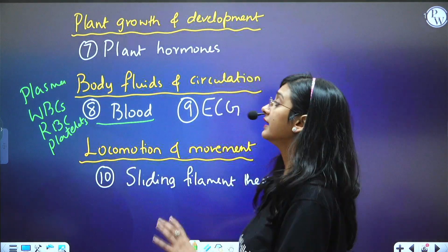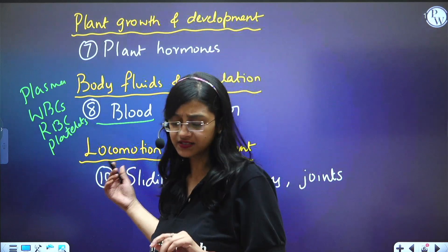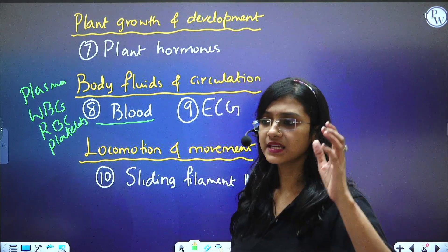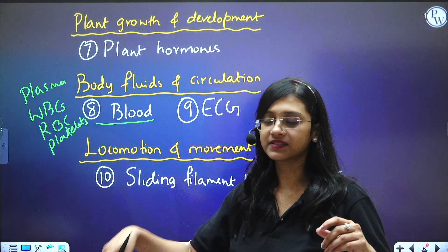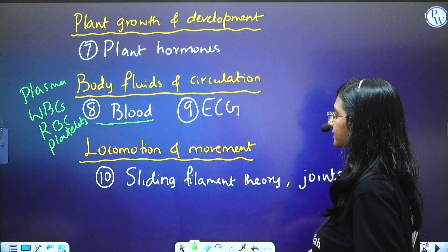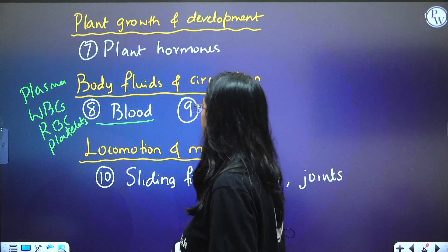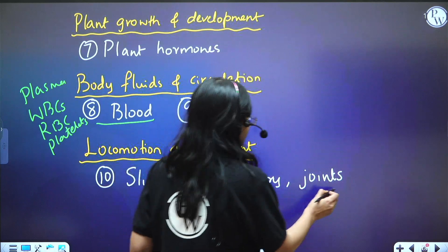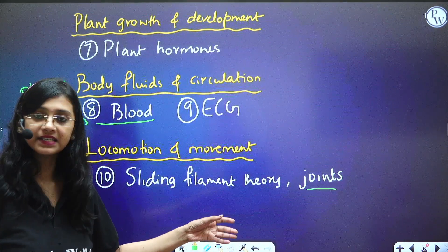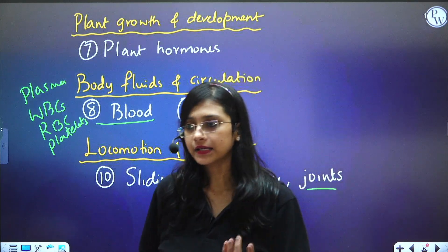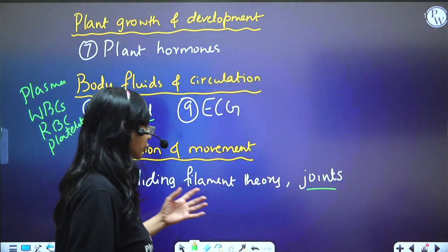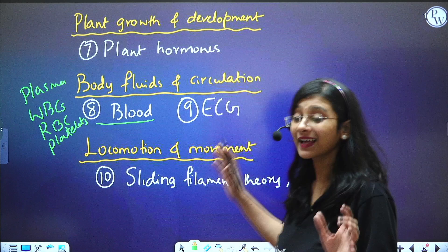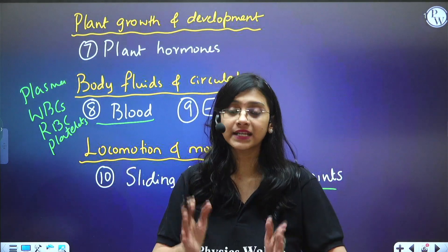Questions are also asked continuously from ECG — based on the graph, what P wave, QRS wave, and T wave represent. From the Locomotion and Movement chapter, questions are asked from joints, and from the sliding filament theory about meromyosin, troponin, and tropomyosin. This is the 10th topic you must know for NEET 2024.